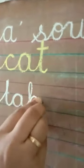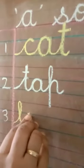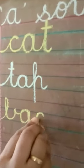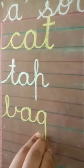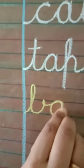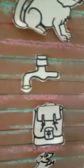Now, next one is bag. In number 3, we write here. B says b, A says a, G says g. B-A-G bag. Again, write. B-A-G bag.